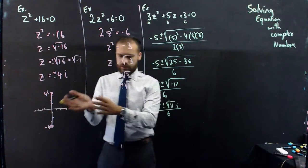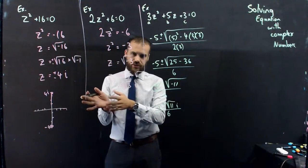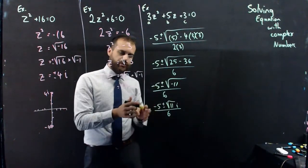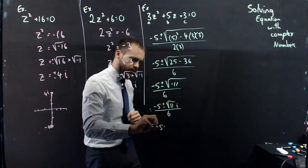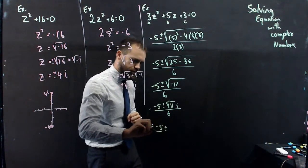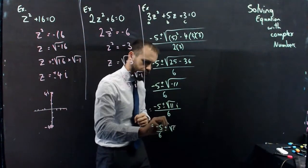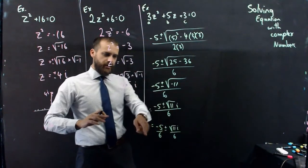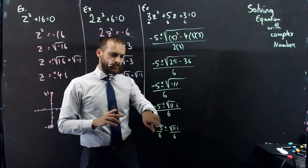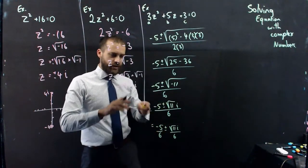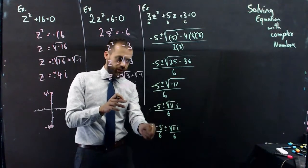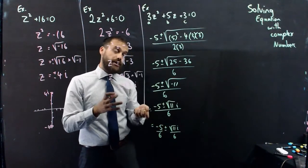So a little more complicated than these two. But same idea. We can actually put that on an Argand diagram if we want to. Just as long as we write it just a little bit differently. And now we have negative 5 over 6 plus that. And negative 5 over 6 minus that. And we can put the real and the imaginary components on our Argand diagram.